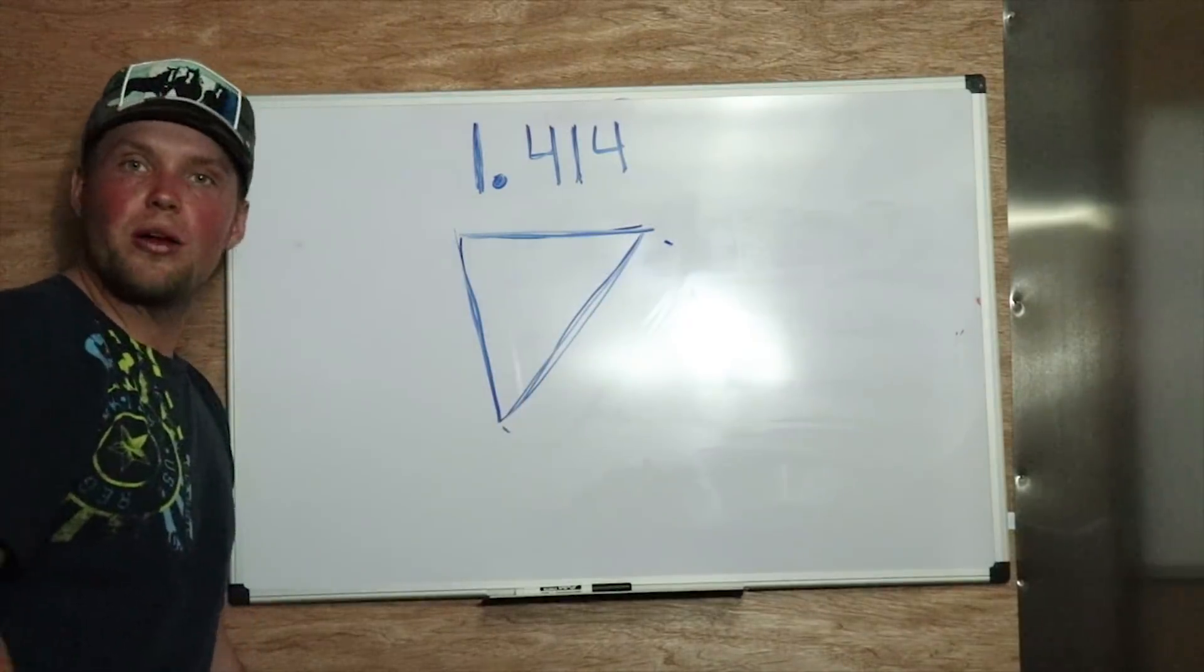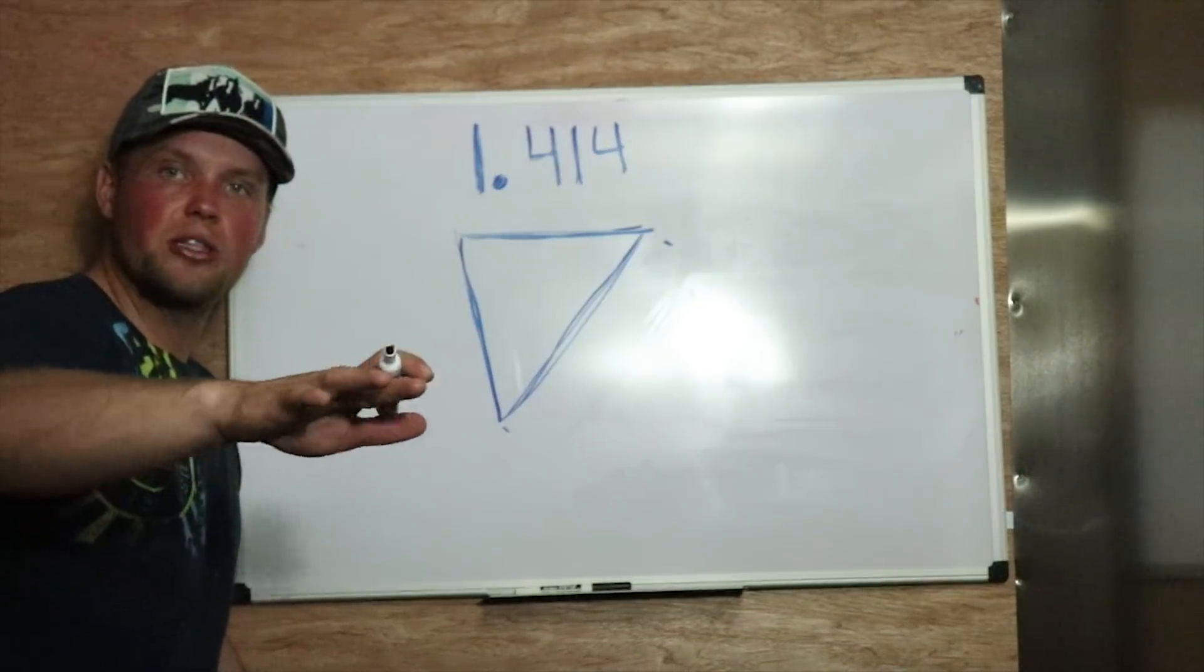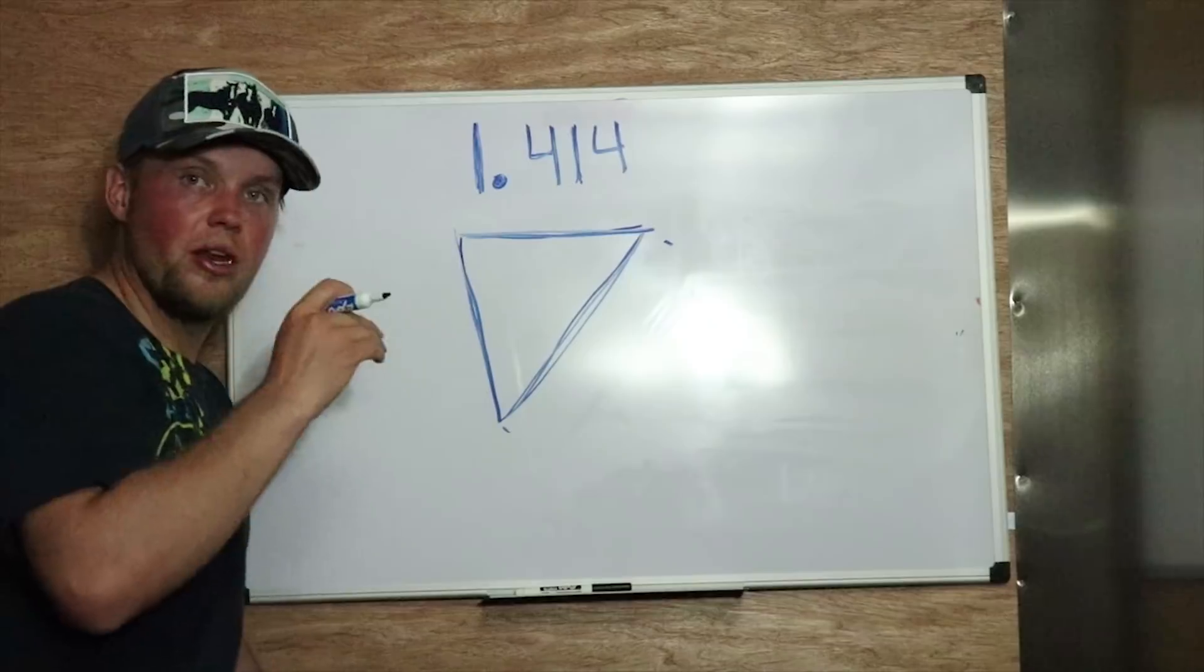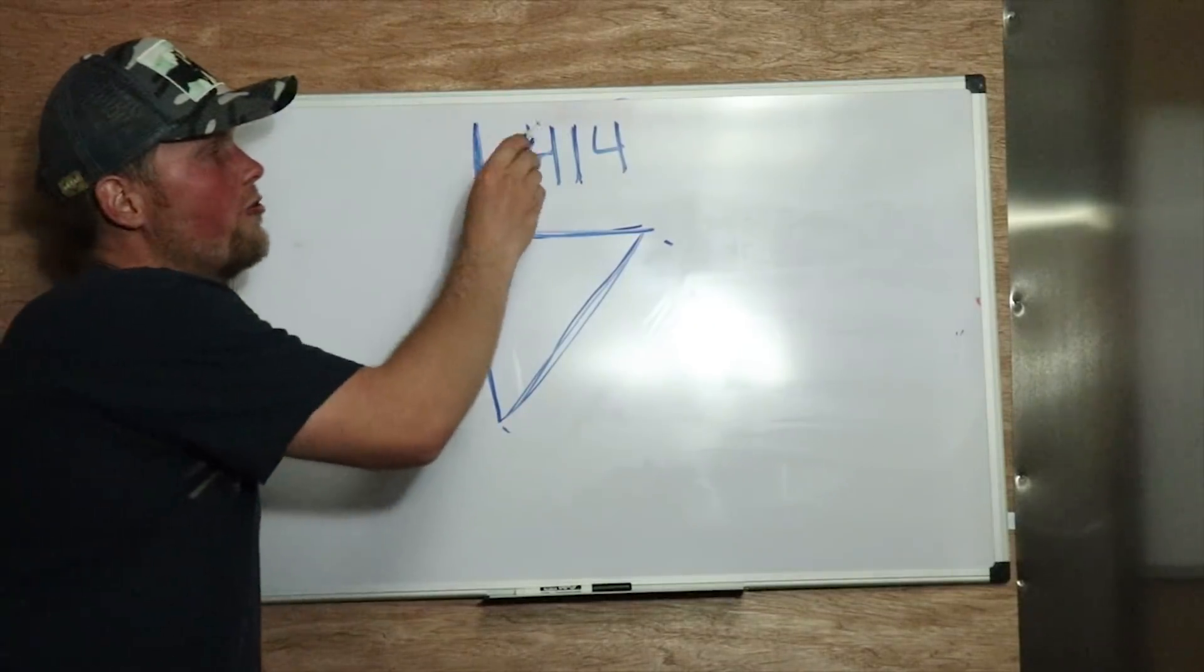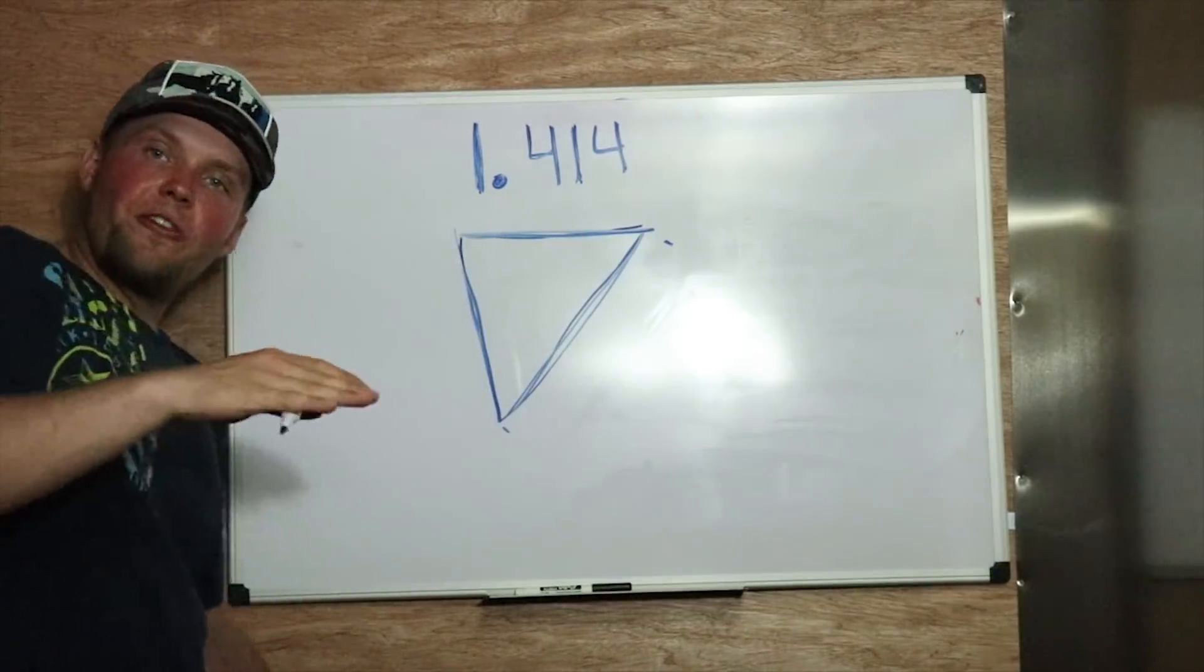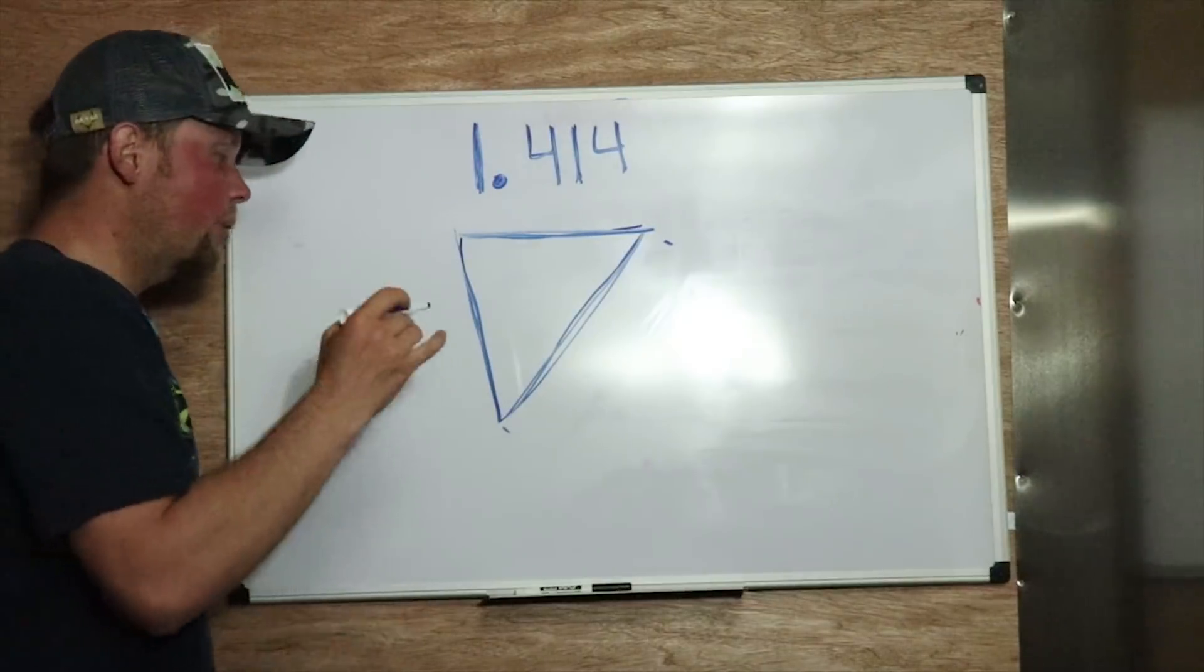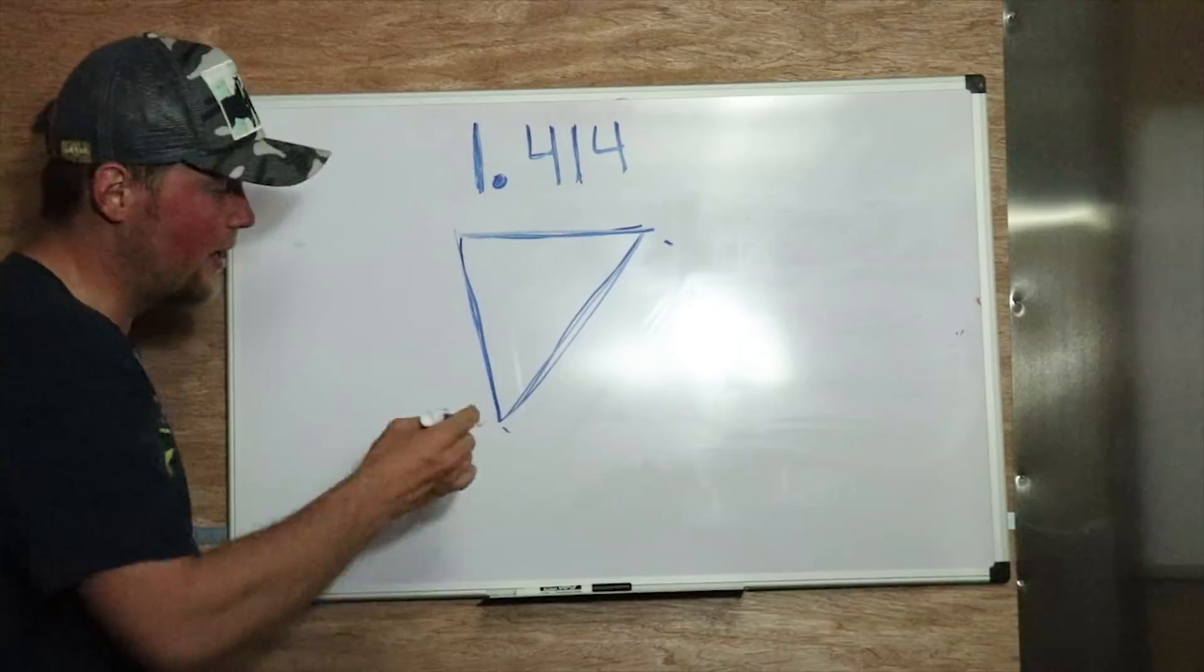So what we're trying to find is this piece right here. The run is what I've always called it. I'm sure I'll get corrected on it, but I've always just called it the run. Now, the number you need to remember the most is 1.414. We're going to find the elevation, but for right now, we're just going to deal with really simple numbers on how to find this run.